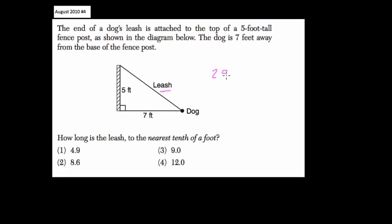So 25 plus 49 equals c squared, and therefore c equals the square root of 25 plus 49, which is the Pythagorean theorem. Take out the calculator here.